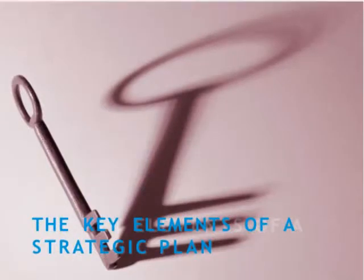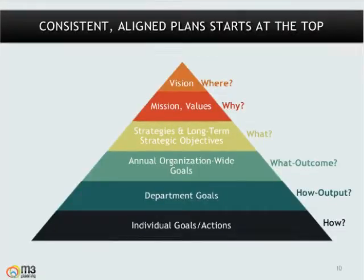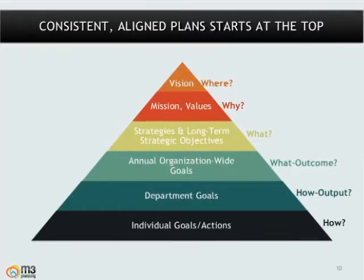Now let's talk about what the key elements of a strategic plan are and how it's organized. Before getting into the details, make sure you're being clear and consistent on what you call these elements. Some folks refer to strategic objectives as strategic priorities, and that's okay — what matters is that you're consistent so you avoid confusion amongst the group. In our My Strategic Plan system, you can actually customize these terms so that you can utilize what your group is most familiar with.